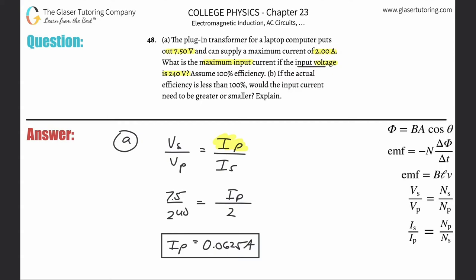Letter B: It also said assume it's 100% efficient. If the actual efficiency is less than 100%, would the input current need to be greater or smaller? It would need to be greater, because we're assuming that there isn't 100% efficiency or 100% conversion from the primary current into the secondary.